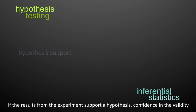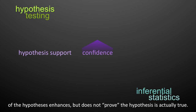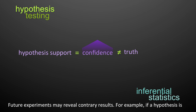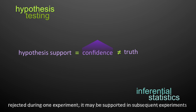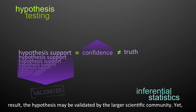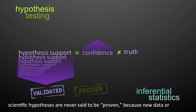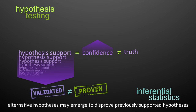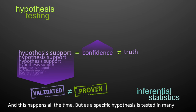If the results from the experiment support a hypothesis, confidence in the validity of the hypothesis enhances, but does not prove the hypothesis is actually true. Future experiments may reveal contrary results. If a hypothesis is rejected during one experiment, it may be supported in subsequent experiments or vice versa. If the experiment is repeated a large number of times with the same result, the hypothesis may be validated by the larger scientific community. Yet scientific hypotheses are never said to be proven because new data or alternative hypotheses may emerge to disprove previously supported hypotheses.